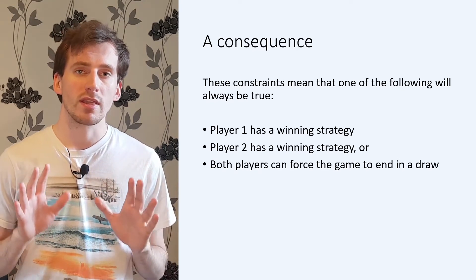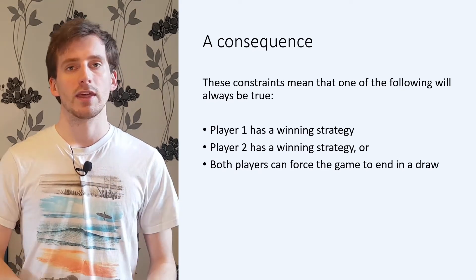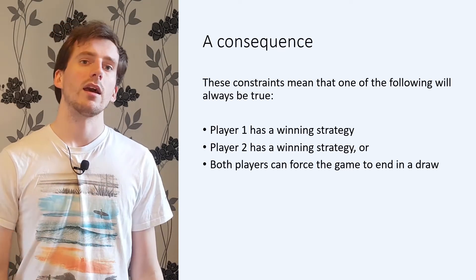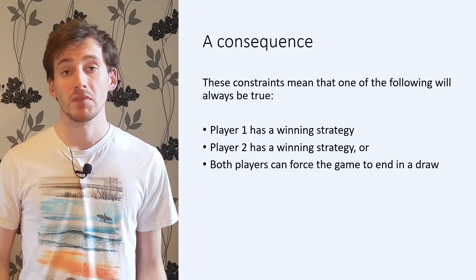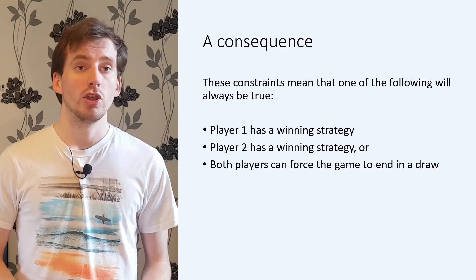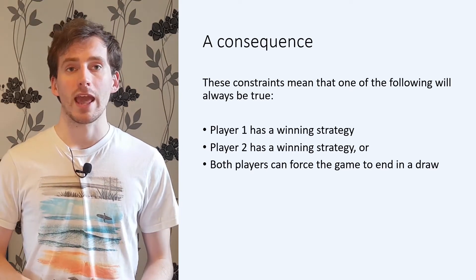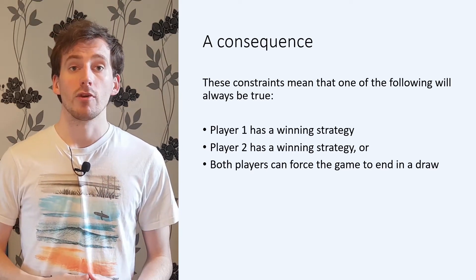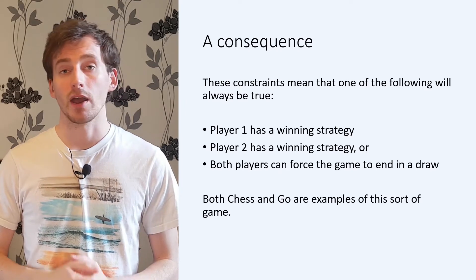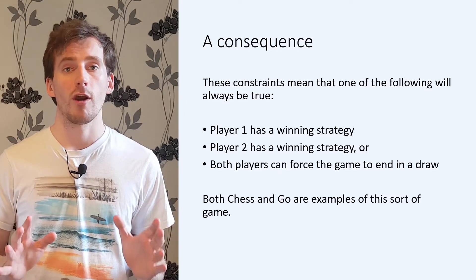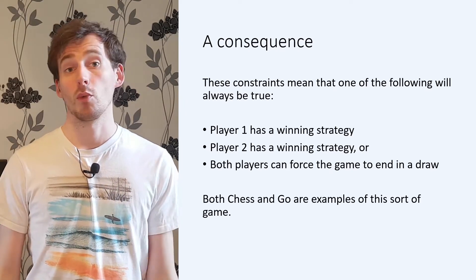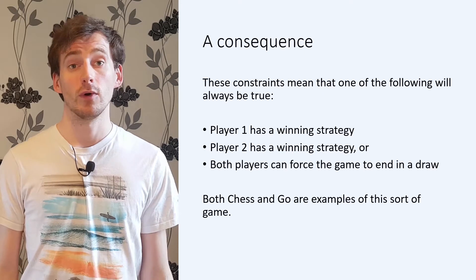These constraints limit the games that we can look at, but they will allow us to analyse the games mathematically. Even with these constraints, you can get some extremely complex games. For example, both chess and go satisfy all of our requirements, but there's no hope of ever coming up with a winning strategy for either game.